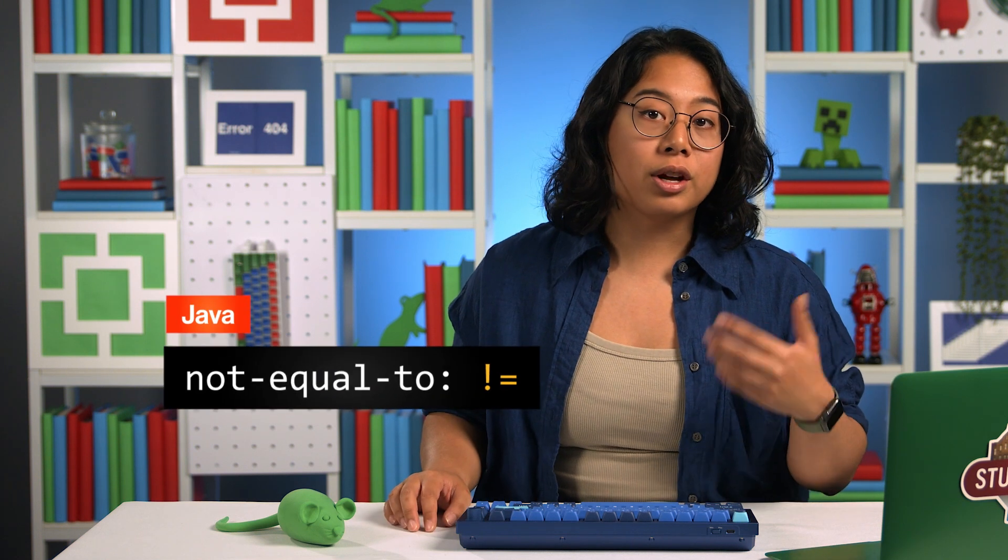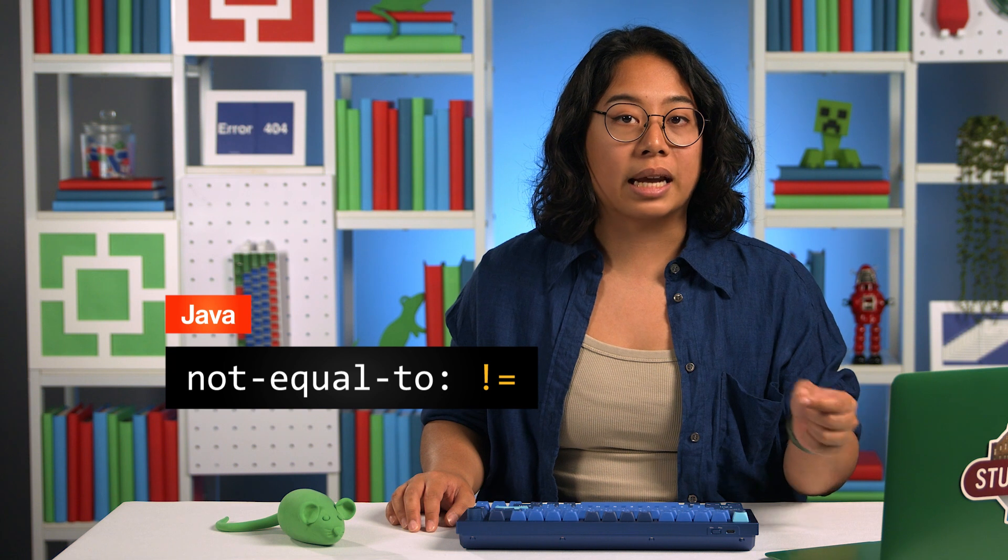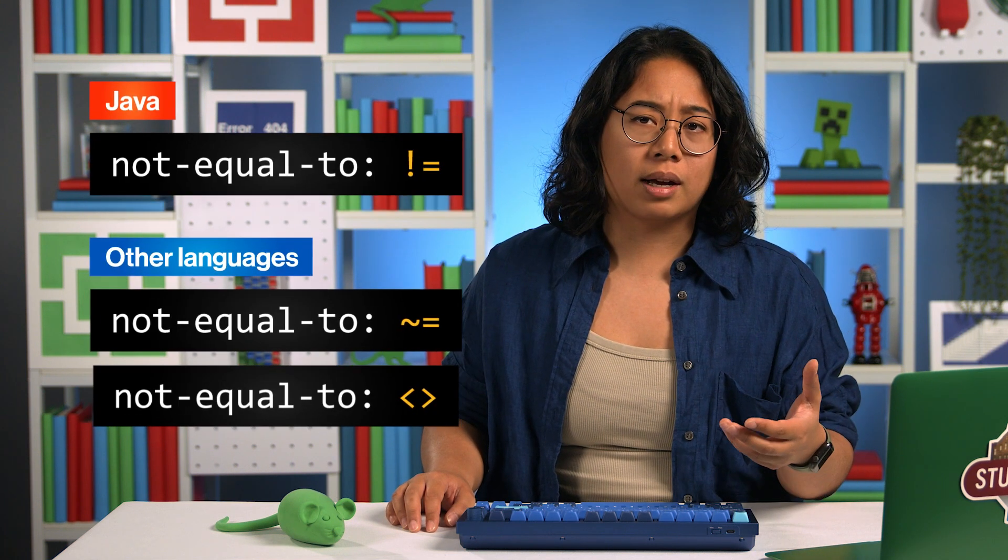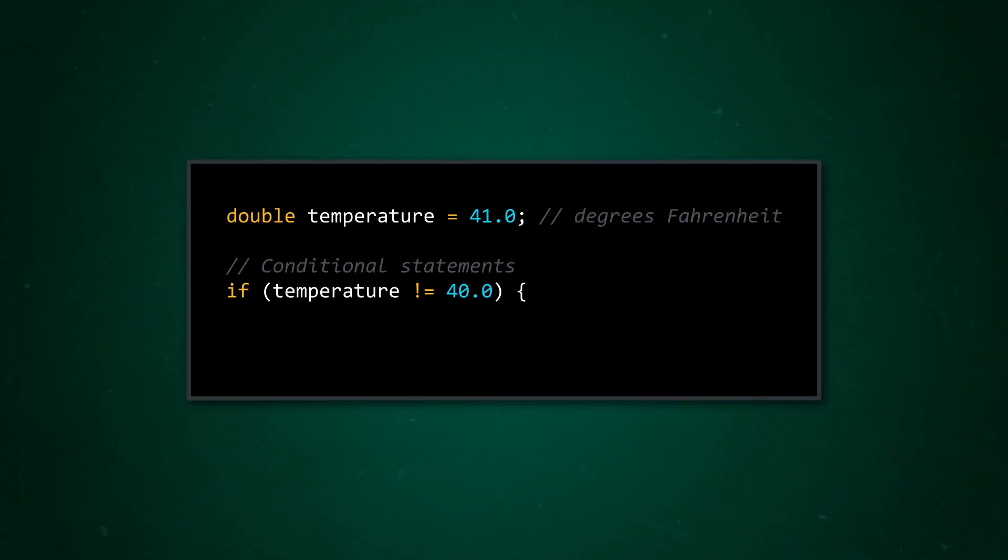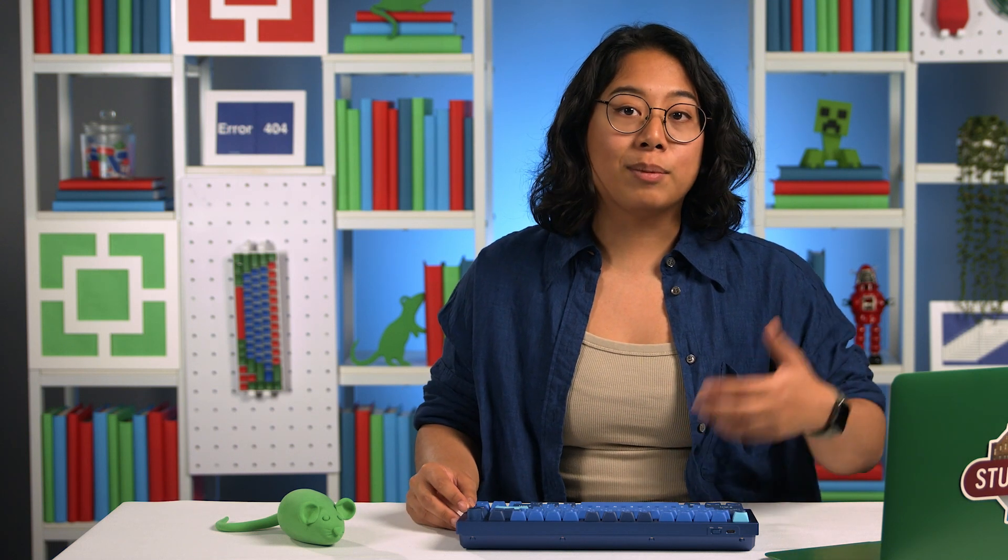And we can also use these relational operators to check if things aren't equal to each other. In Java, the not equal to operator is an exclamation point and an equal sign. But in other languages, you might see it represented by a tilde equals or a less than and greater than sign next to each other. Like, imagine we have a very expensive cheese for our lasagna that needs to stay at exactly 40 degrees. We can use our temperature program to monitor our fridge instead of the outdoors and send out a warning if the temperature deviates from 40 degrees to make sure our lasagna is safe. This time, we're using the inequality operator, so the warning is triggered when the temperature doesn't equal 40. All of these different relational operators give us more tools for asking even more complex questions beyond if two things are just equal to one another.